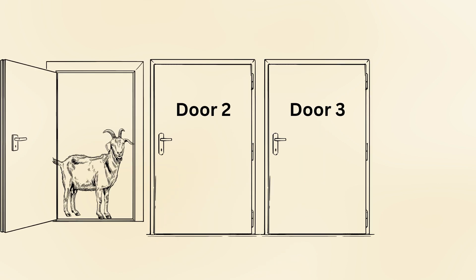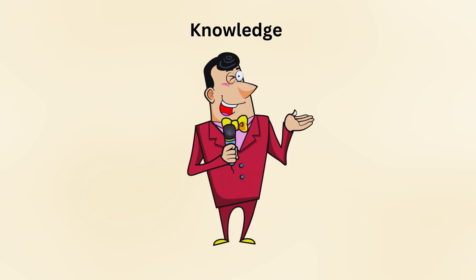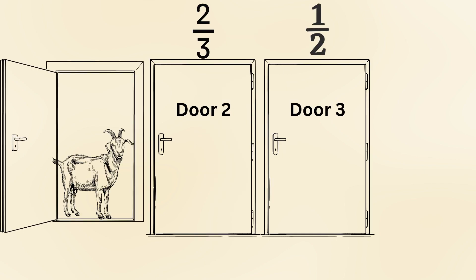Many people believe that after one door is opened, the remaining two doors have an equal chance of hiding the car, but that assumption ignores the host's role in the game. The host's knowledge is key. Because the host intentionally reveals a goat, the remaining door carries the probability of the unchosen options, which is 2-3.